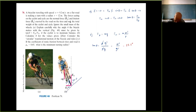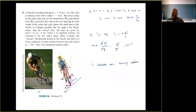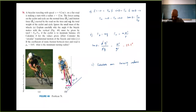For part c — finding the minimum turning radius given μ = 0.65 — I'll leave that as a homework exercise for you. That's it for today, thanks for coming, see you next week.